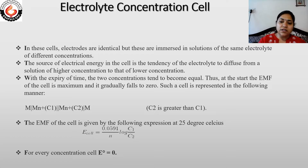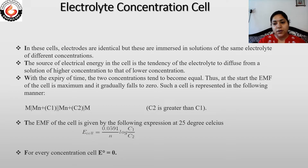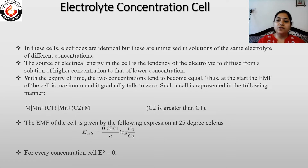Electrolyte concentration cells are similar to galvanic cells and are also used to produce electricity, though the amount is very low compared to a normal galvanic cell. The source of electrical energy is the tendency of the electrolyte to diffuse from a solution of higher concentration to one of lower concentration. With time, the two concentrations tend to become equal, and when they become equal, there is no production of electricity. So the EMF of the concentration cell is highest at the start and gradually falls to zero.